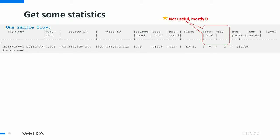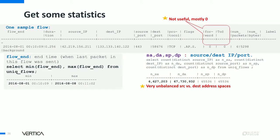We can also compute summary statistics. Looking at a sample flow, the 'forward' and 'TOS' columns have zero values — and further exploration shows a large number of records where these columns are essentially zero, making them probably not helpful. We check the flow end timestamps and confirm it's about one week of data from the first to the eighth. Checking data balance — important for classification use cases — shows the source versus destination address space is highly imbalanced. Vertica has powerful balancing functions supporting min-undersampling, oversampling, or hybrid sampling.